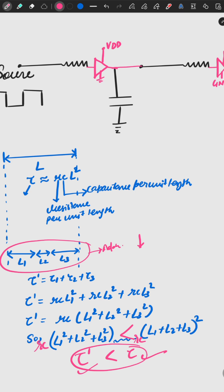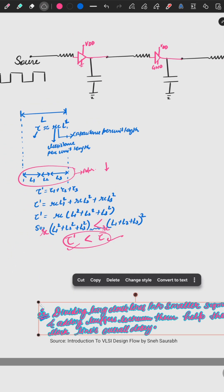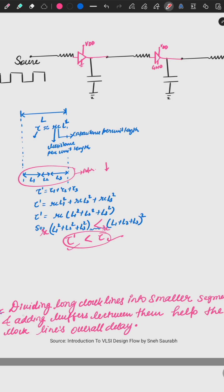I've mentioned the source where you can study this. The final conclusion: dividing long clock lines into smaller segments and adding buffers between them helps reduce the clock line's overall delay. The delay is reduced and signals that were loading are also strengthened. Thank you.